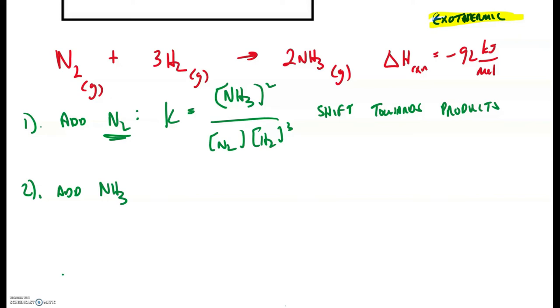By the same token, if we were to add NH3, this is going to add more product, that would have to shift the reaction towards the reactants because we would want to reduce the amount of product present to resume K. And that's pretty straightforward.